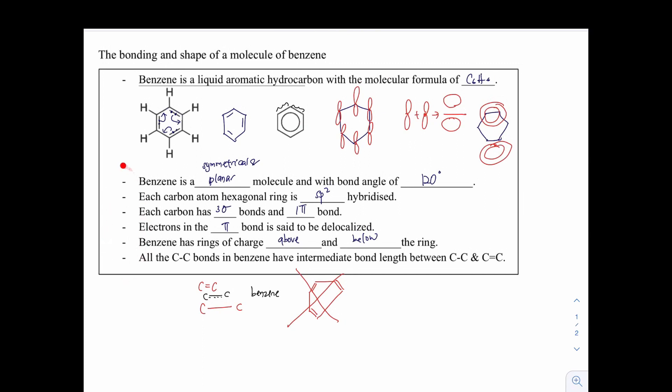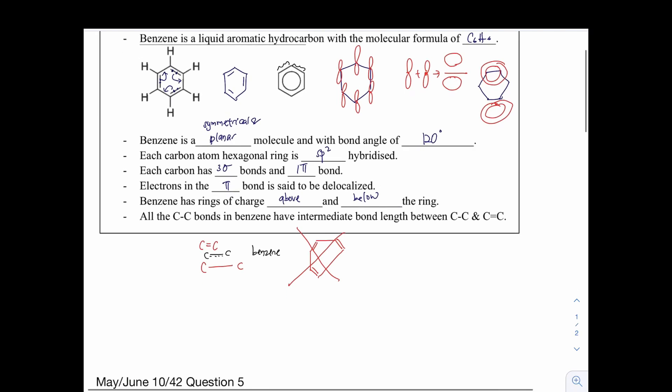The six points here are very important in order to explain a past paper question in Paper 4. So out of six points here, you have to memorize five points for the questions of explain the bonding and the shapes of a molecule of benzene, which is worth five marks. Now, we are going to discuss another question regarding the structure and also the bonding of benzene.